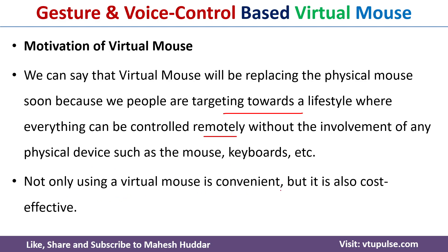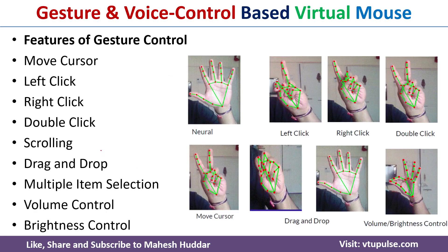The virtual mouse is also convenient and cost effective. Following are the features of the gesture control system. We can perform different operations with the help of gestures. In the neutral state, with the help of two fingers — the index finger and the middle finger — we can move the cursor. With the middle finger we can do a left click, with the index finger we can perform a right click, and with both fingers together we can perform a double click.